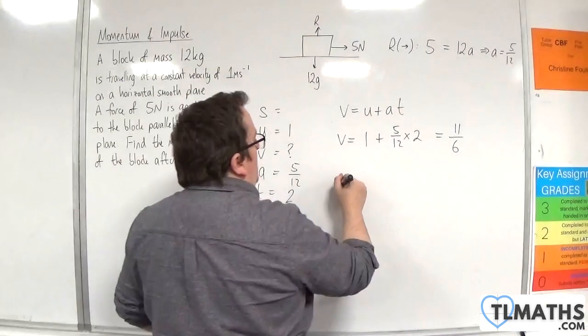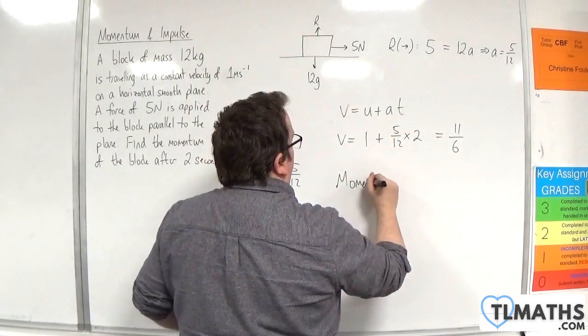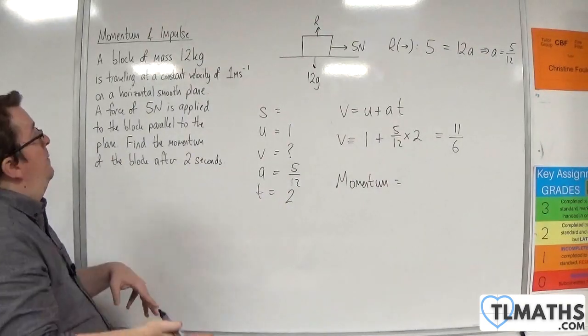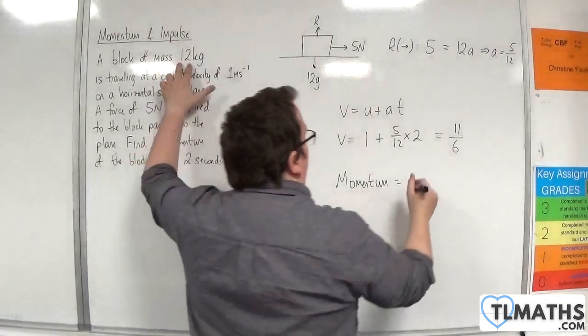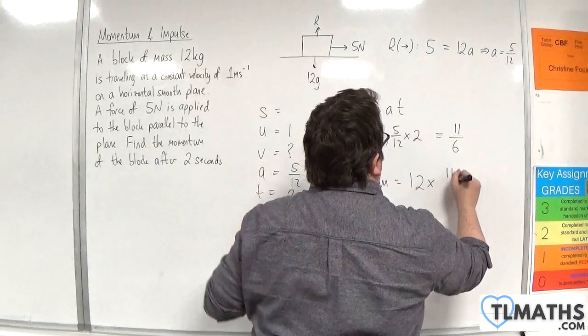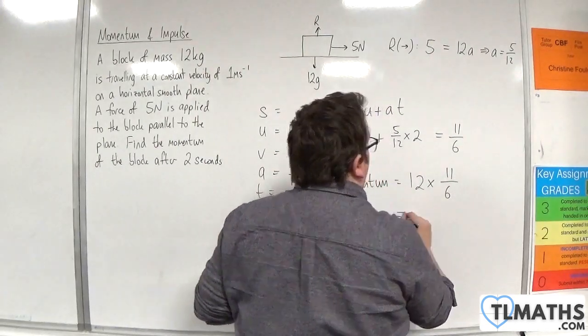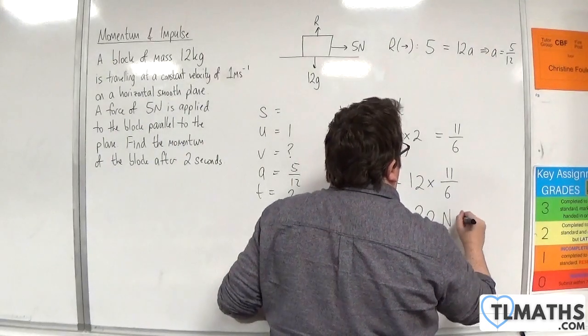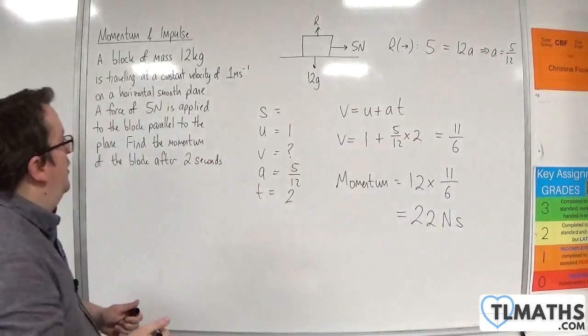So the momentum is equal to the mass times the velocity. So 12 times by the velocity 11 over 6. And so in this case we have 22 newton seconds and that's our momentum.